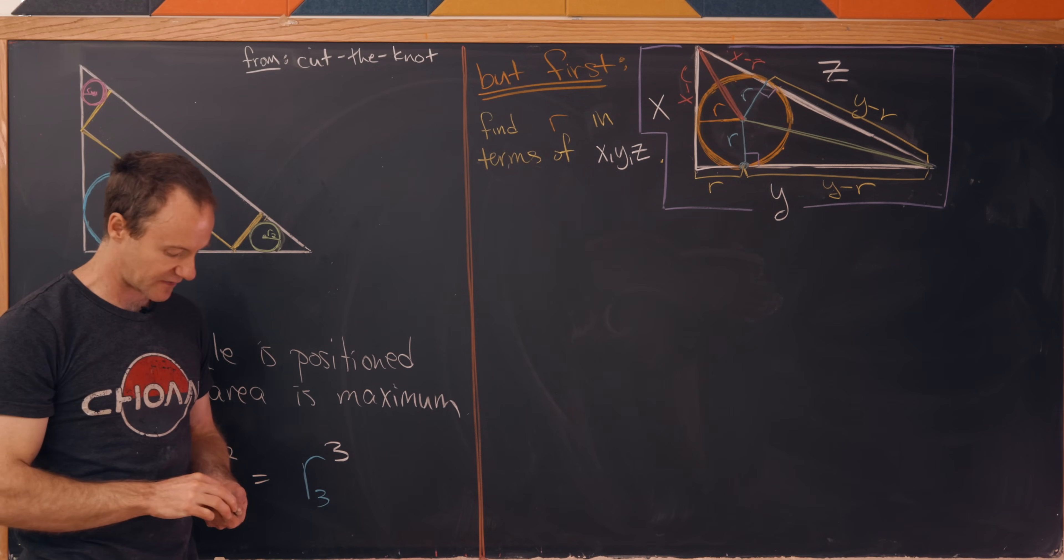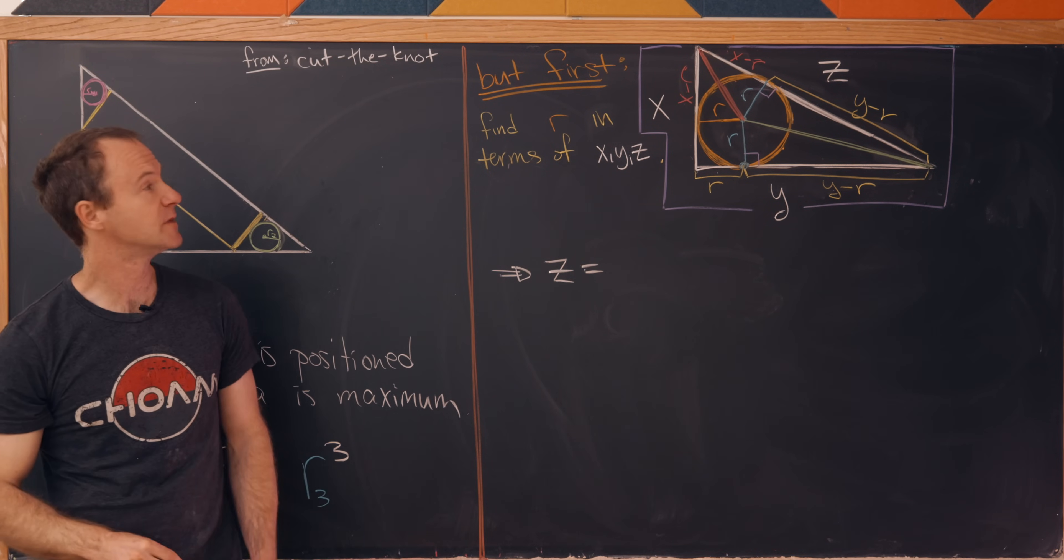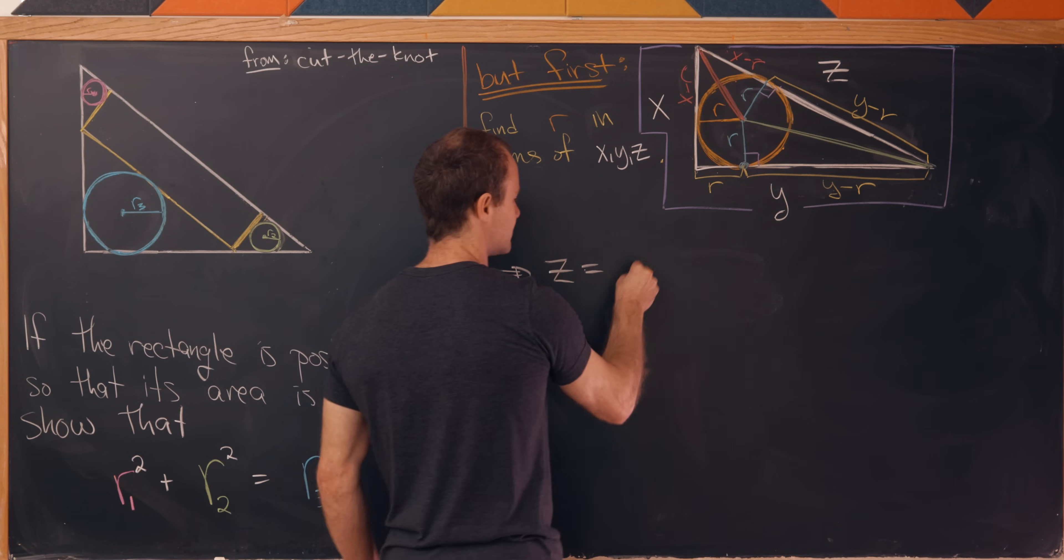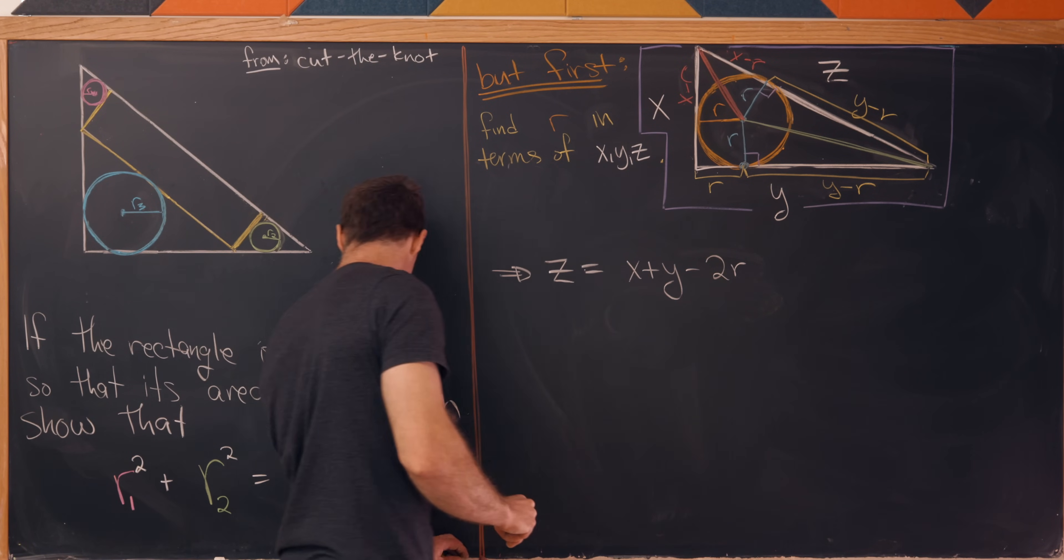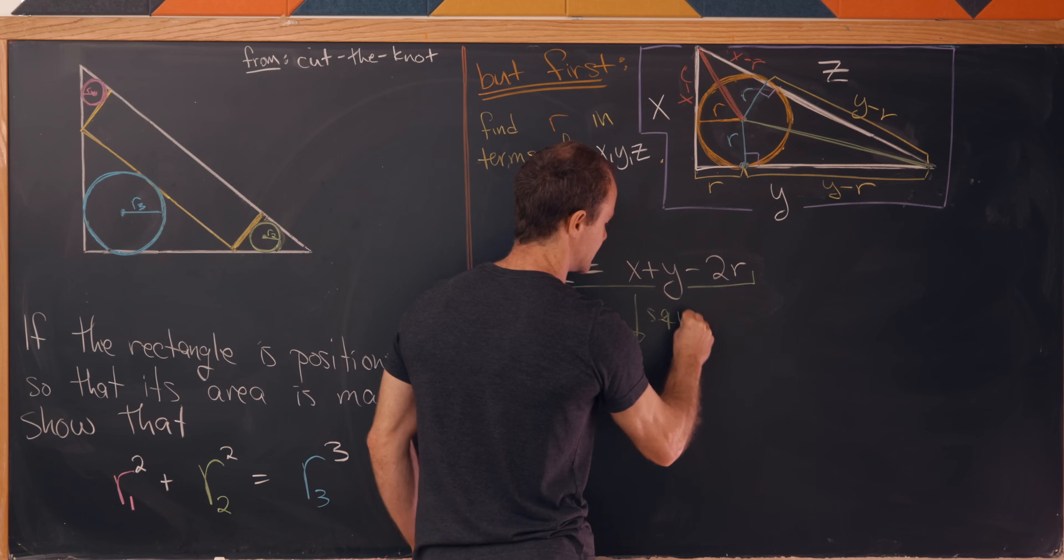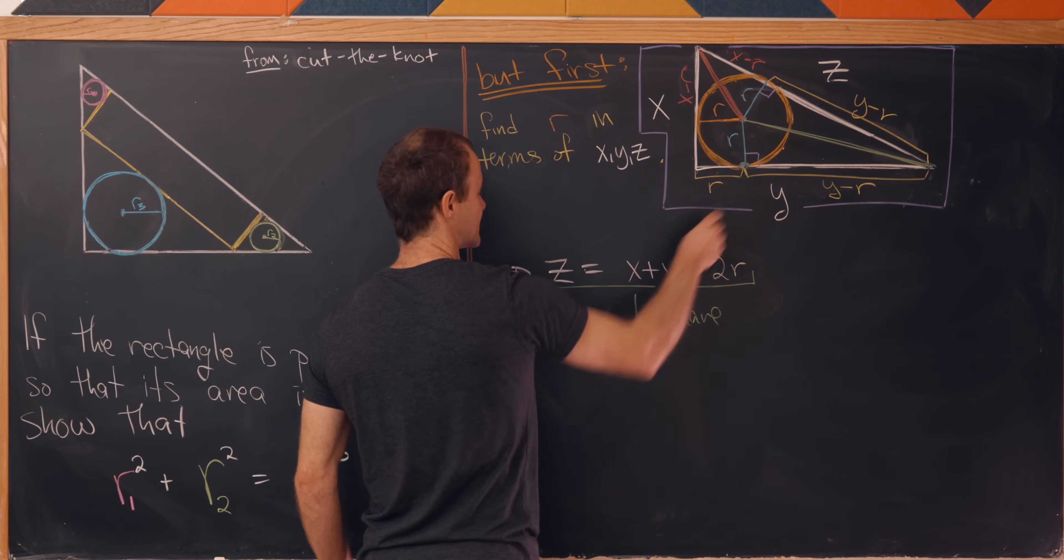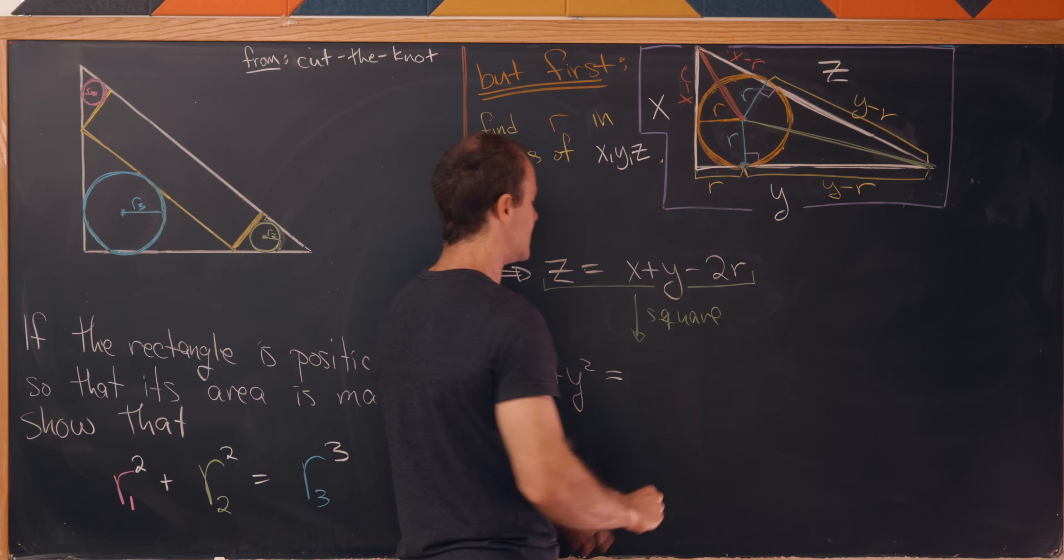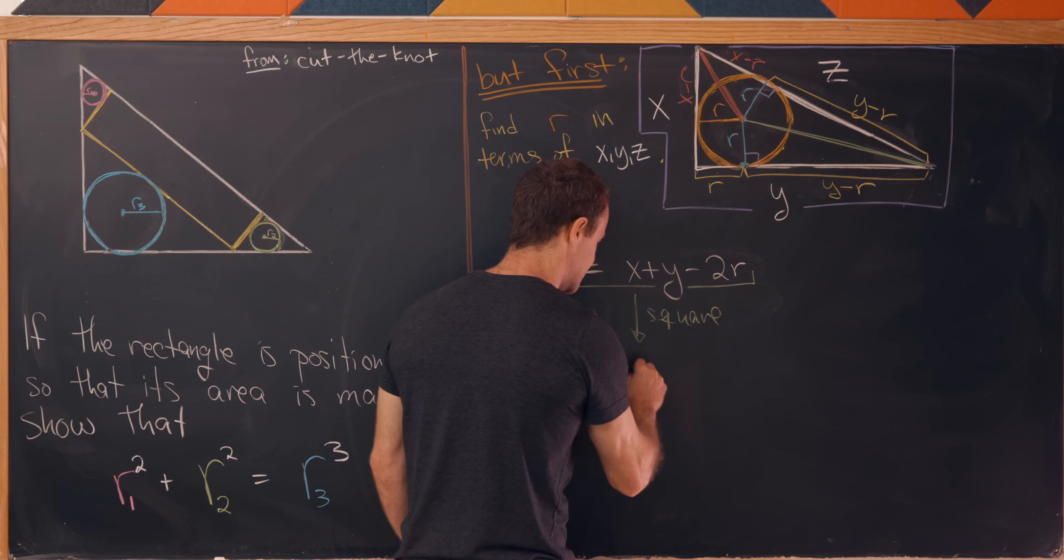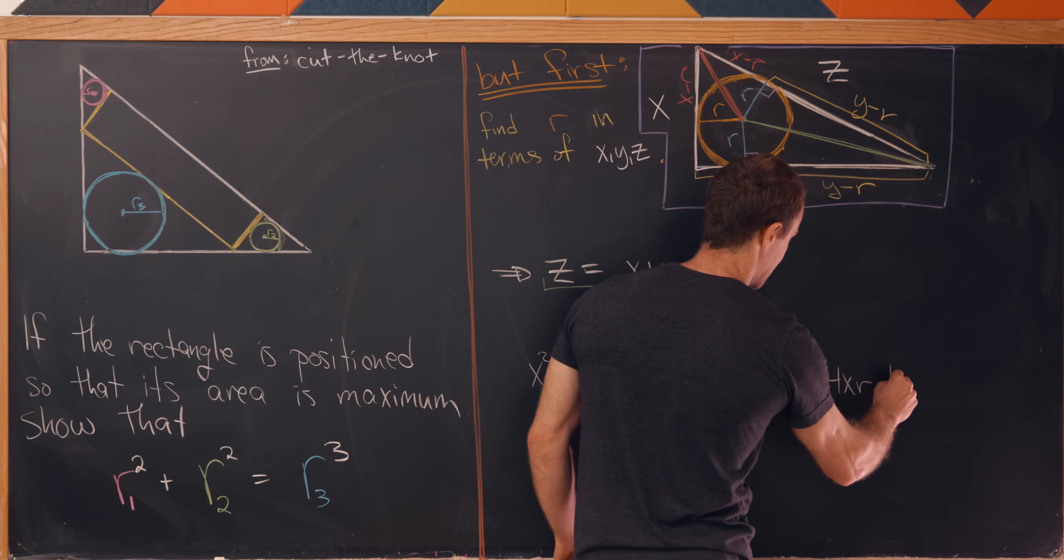Now we can calculate the hypotenuse two different ways. We're given that the hypotenuse has length z. But also by the sum of these two line segments we have x minus r plus y minus r, which simplifies to x plus y minus 2r. Squaring this entire equation gives us simplification. If we square z we get z squared, but by the Pythagorean theorem that's x squared plus y squared. Squaring the trinomial x plus y minus 2r gives us x squared plus y squared plus 4r squared plus 2xy minus 4xr minus 4yr.